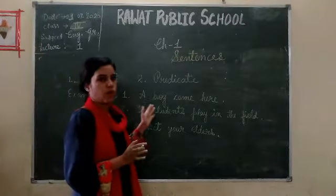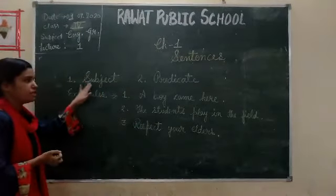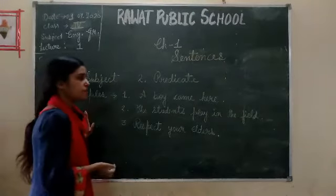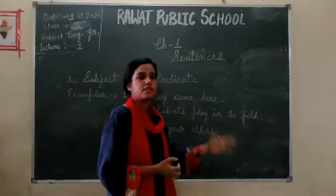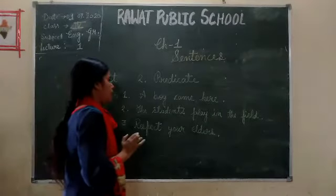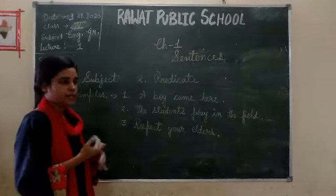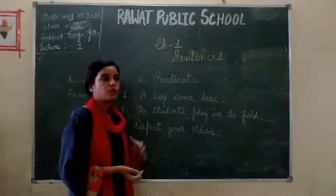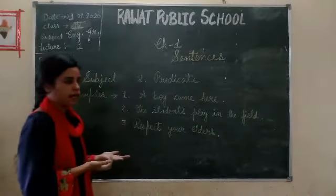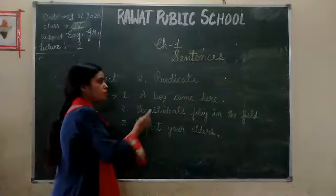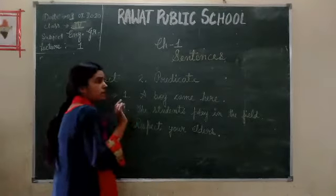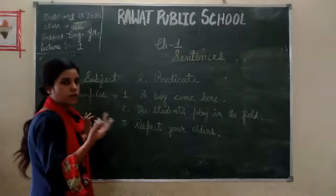There are two parts of a sentence. The first is the subject and the second is the predicate. What is the subject? The subject is what the sentence is about — what is being talked about or described in any sentence. We have to look at the starting words and the next words.